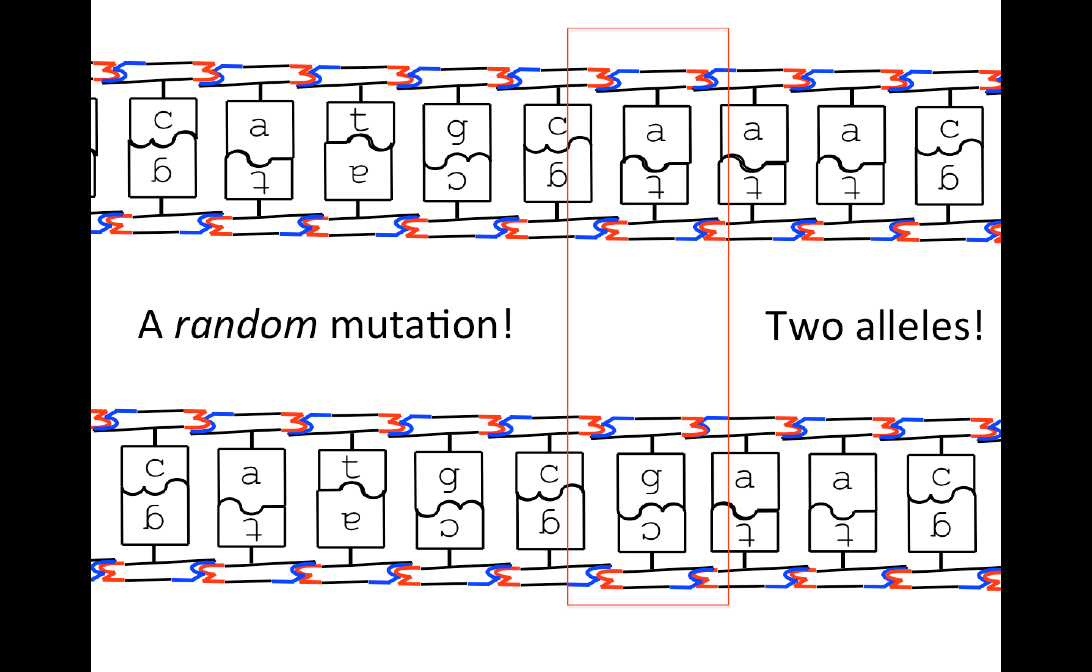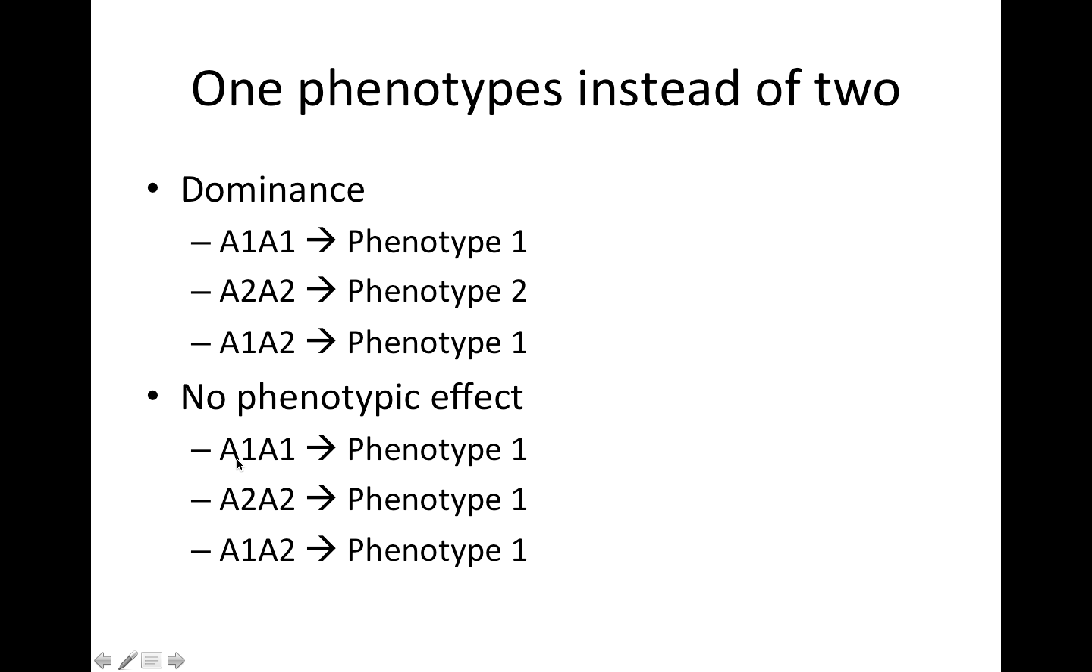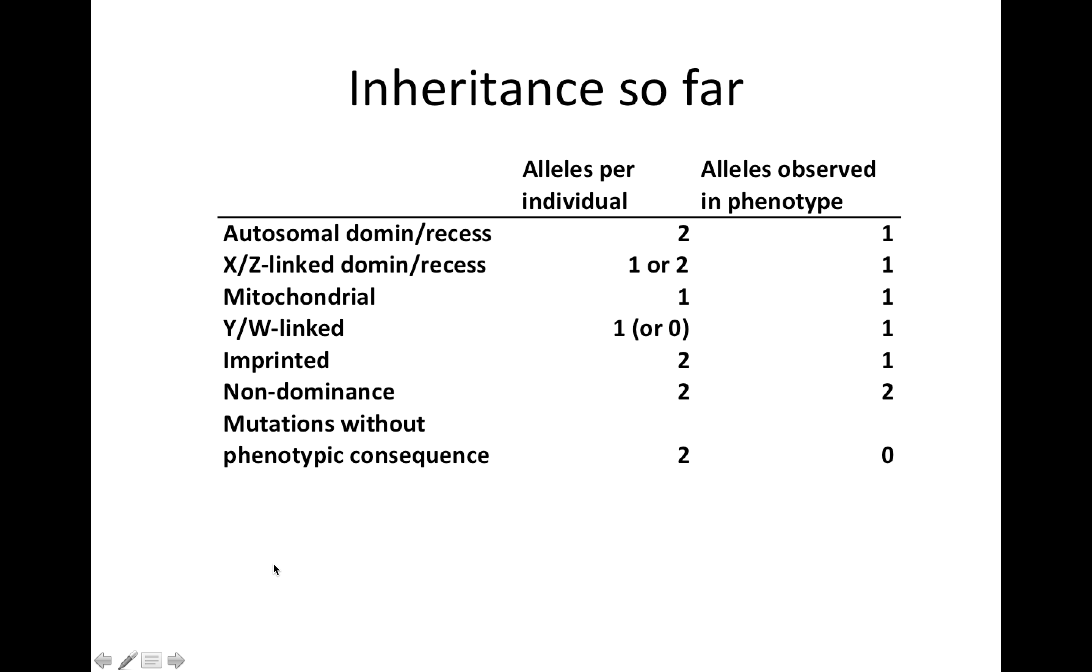And so what that means is if we have this random mutation giving us two alleles, we can still, like, if we sequence the individual, we would be able to see which of the alleles it has, but we may not see a different phenotype. So if we have our two alleles here, let's call them A1 and A2, that would mean if which alleles you have do not impact your phenotype, then we actually expect to see no phenotypic differences between them. And so in fact, if we have mutations that do not have phenotypic consequences, which we often do, then we really don't observe either of those alleles in our phenotype.